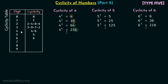Again we are getting something similar to 0 and 1: digit 0 has cyclicity equal to 0 itself, 1 has cyclicity equal to 1, 5 has cyclicity equal to 5, and 6 will also have cyclicity equal to 6.